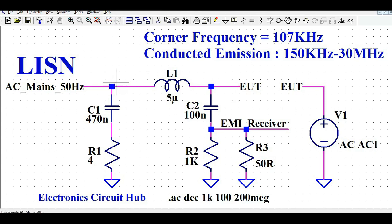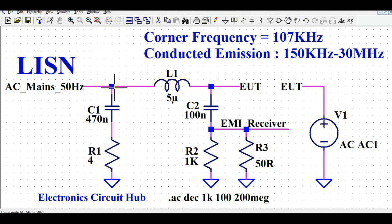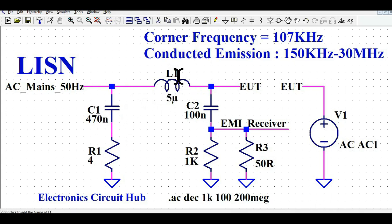There can be radio frequency noise coming from your AC mains source. Since we have designed a low-pass filter here, it will attenuate high-frequency noise coming from the AC mains port. I have designed a low-pass filter using L1 and C1, with a corner frequency of 107 kHz.